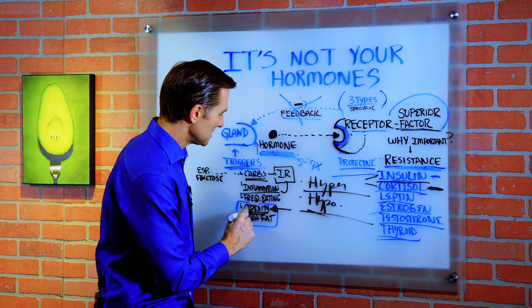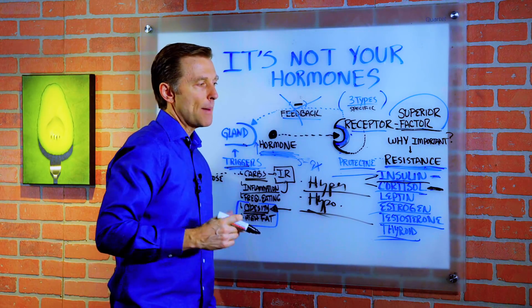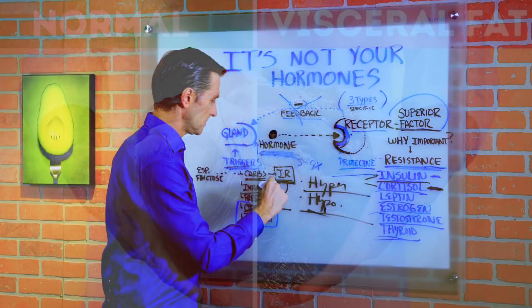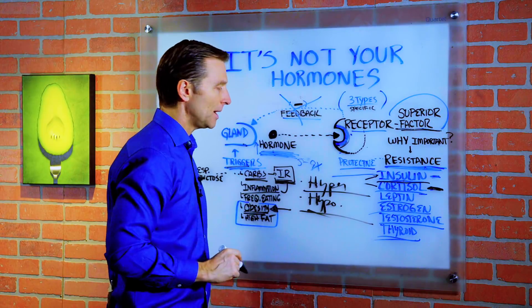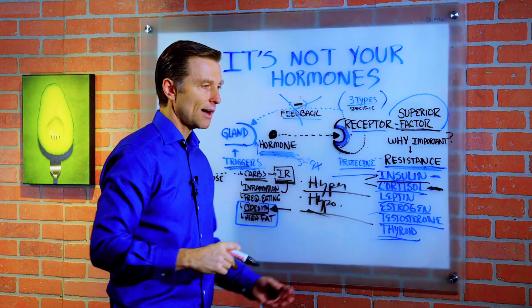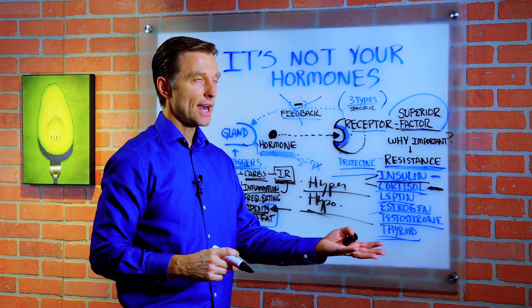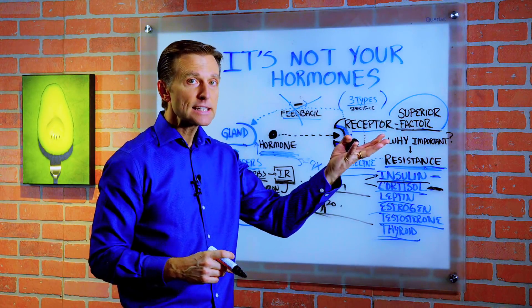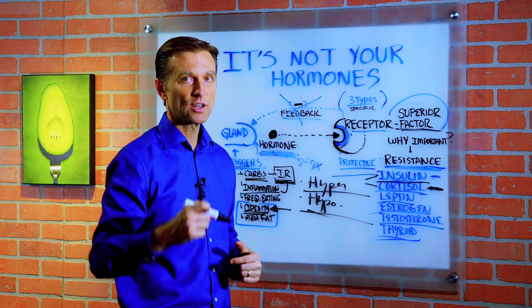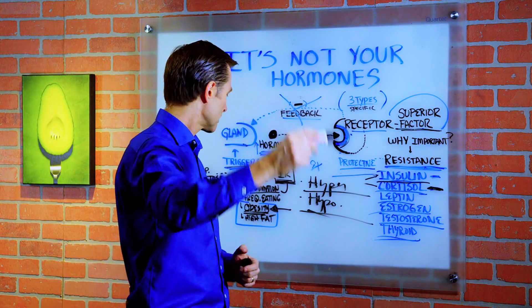Obesity is really a symptom. It is true that visceral fat will make insulin resistance worse, but insulin resistance causes elevated insulin which then causes visceral fat — so it can go around and around in a circle.